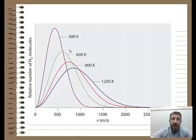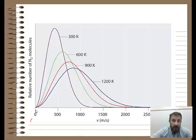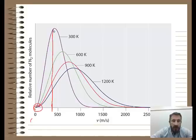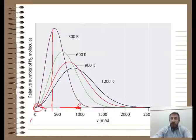This is a graph of the number of molecules versus speed for each temperature. At 300 K, that's pretty much the average we see here, but there are particles moving faster and particles moving slower. So at any given temperature, the average kinetic energy is just that — an average. There are particles moving faster and particles moving slower.